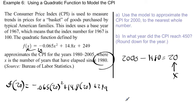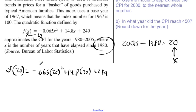So f(20) = -0.065(20)² + 14.8(20) + 249. Make sure you use a calculator to do this. Just punch this straight into your calculator as you see it from left to right. So if you put in -0.065 × 20² + 14.8 × 20 + 249, just do that straight from your calculator.